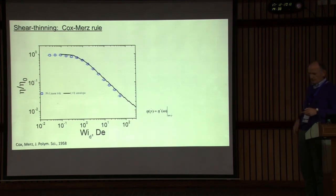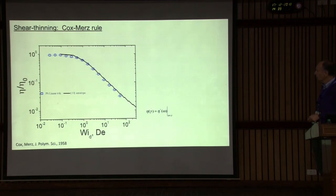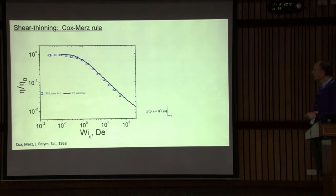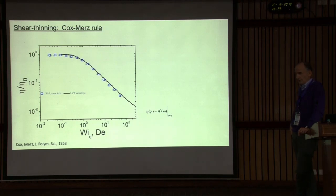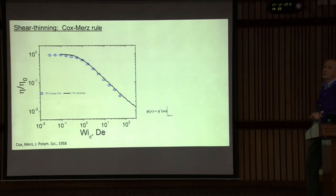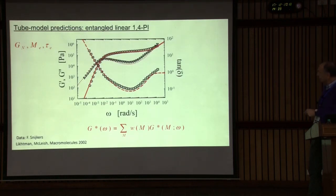Getting back to shear thinning, the first way to think about it is the simple empirical Cox-Merz rule. That's normalized viscosity versus Weissenberg number or Deborah number — normalized shear rate versus normalized frequency. The data here for an entangled polystyrene melt show steady shear viscosity, and the line is the dynamic measurements. This rule tells you that when the rate equals the frequency of oscillation, the two viscosities — steady shear and dynamic — are identical. One can use the dynamic data to extract information about shearing.